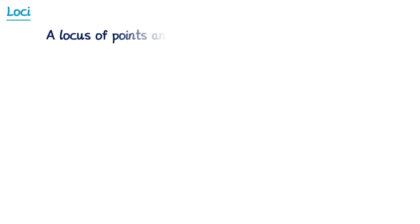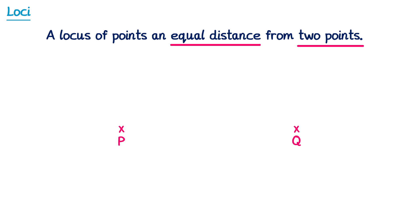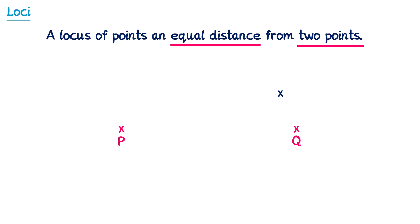The next locus is a locus of points that are an equal distance from 2 points. We'll draw two points, P and Q. A point much closer to P than Q won't work, and the same for a point much closer to Q. We're looking for points that are the same distance between P and Q — one right in the middle would work, as it is the same distance to P as it is to Q.